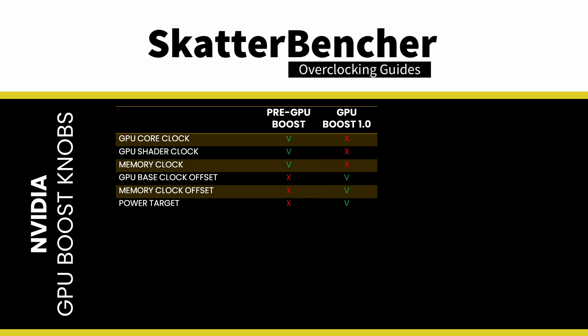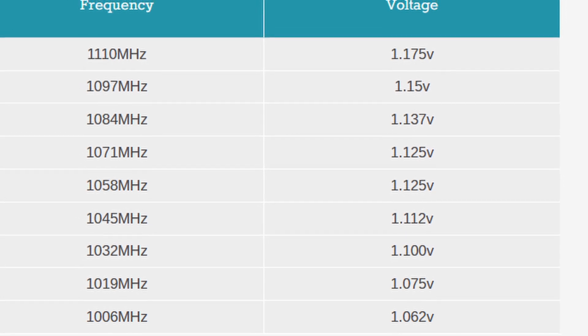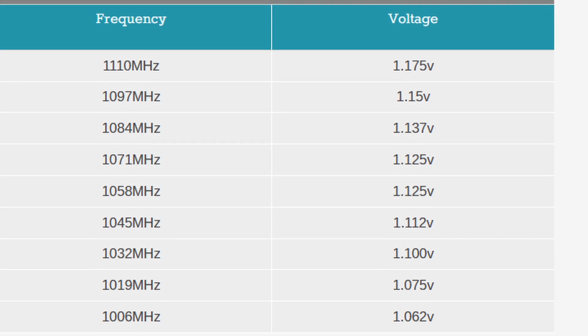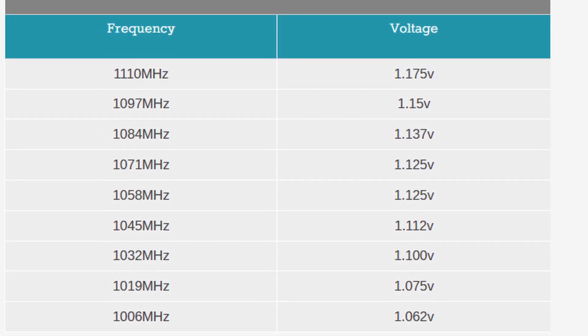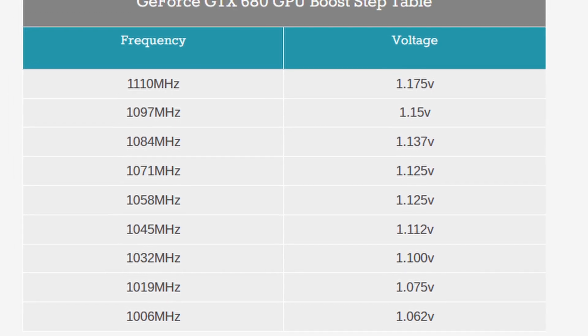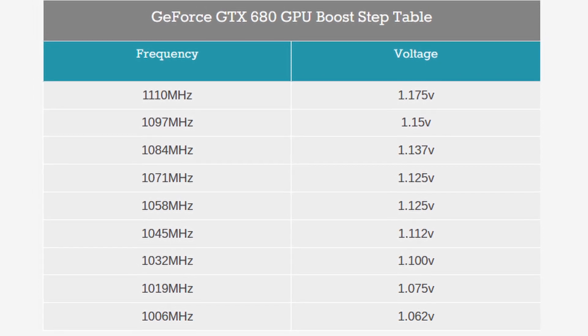The memory clock offset simply adds an offset to the default memory frequency, similar to how the GPU base clock offset works. Overvolting is indeed missing from GPU Boost 1.0. Nvidia still allows for a dynamic voltage that changes depending on the load; however, the maximum voltage is capped to a V-REL, or reliability voltage. That value is determined by Nvidia and reflects the highest voltage the GPU can run safely without any impact on its lifespan.